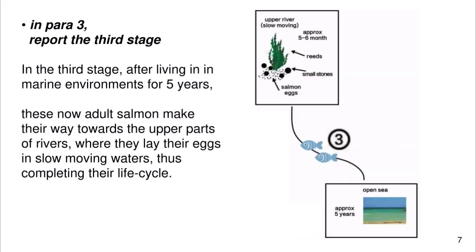In paragraph 3, report the third stage: 'In the third stage, after living in the marine environment for five years, these now adult salmon make their way towards the upper parts of the river, where they lay their eggs in slow-moving water, thus completing their life cycle.' The next slide will show the entire task. Thank you for watching.